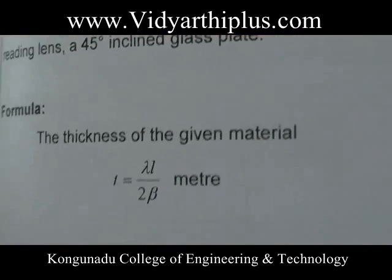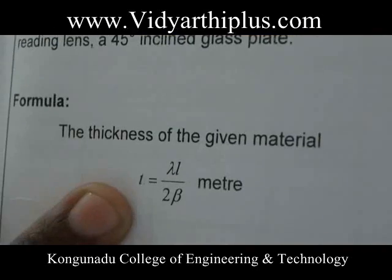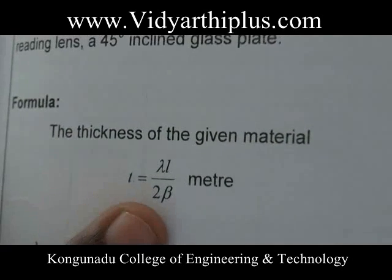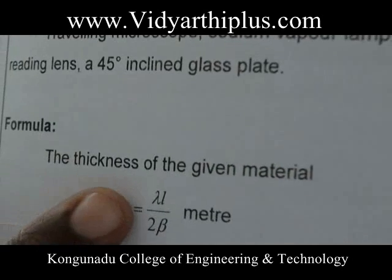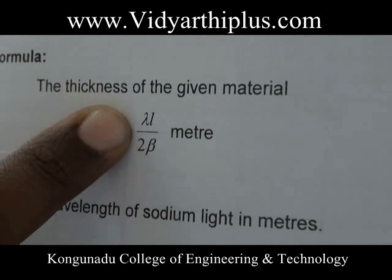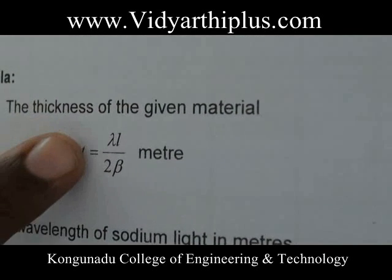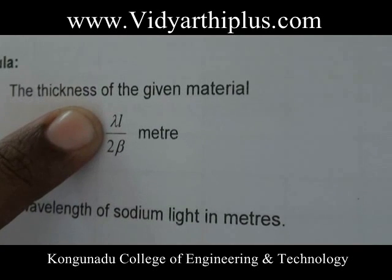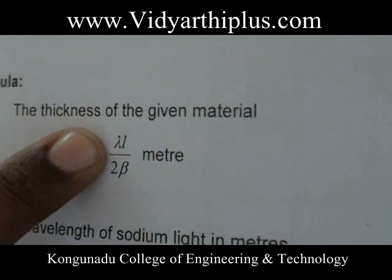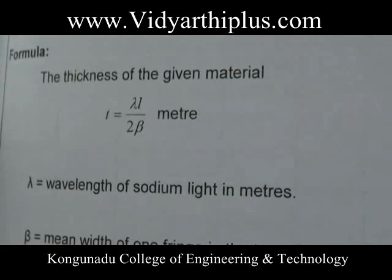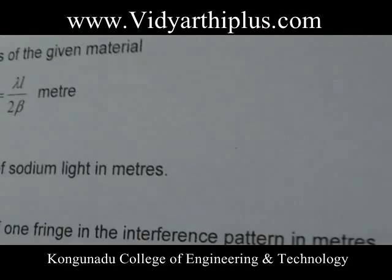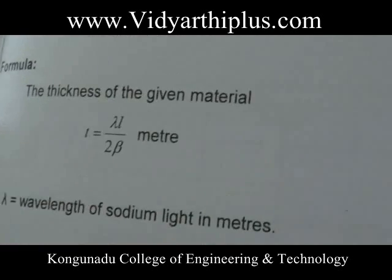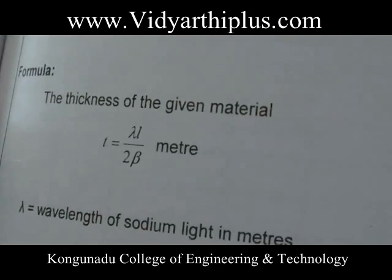Using this formula we can determine the thickness of the given material. The formula is T = λL / 2β, where λ is the wavelength of the sodium vapor light, equal to 5.893 × 10⁻¹⁰ meters. L is the distance between the edge of contact and the wire, and β is obtained from the tabular column.